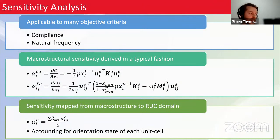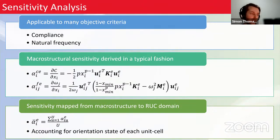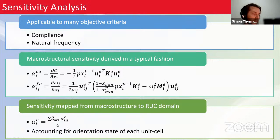We use a sensitivity analysis. In our published manuscript we looked at compliance and natural frequency criteria. For periodic optimization, we take the macro structural sensitivity and map it into the representative unit cell domain — our design domain — using a simple averaging function. In oriented arrangements, we must account for the relative location of each element with respect to the orientation of its unit cell.